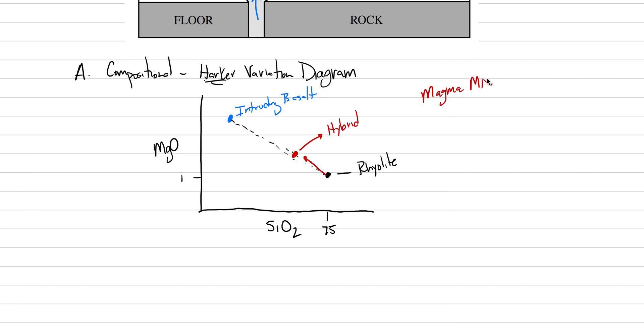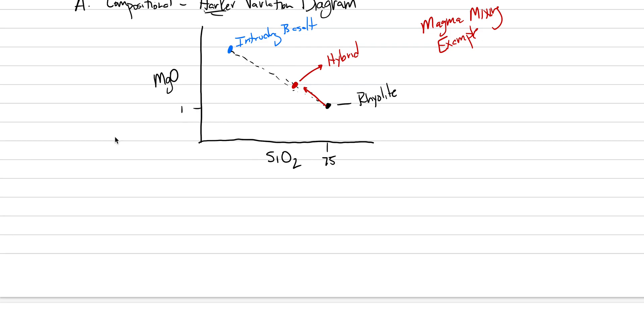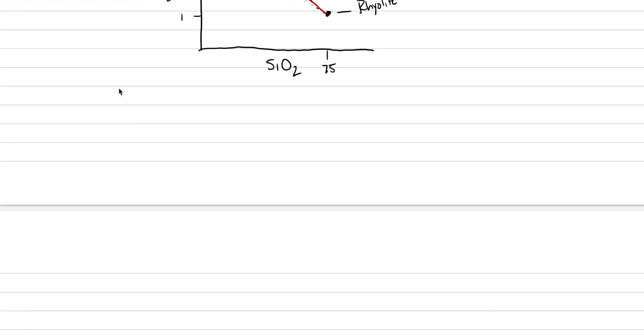That's all a Harker variation diagram is, and it can be used to describe magma mixing. This is a magma mixing example. We're going to also use Harker variation diagrams to explain fractional crystallization and assimilation processes.